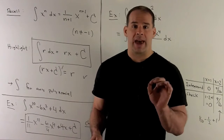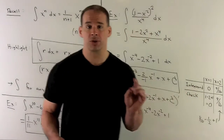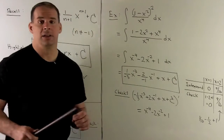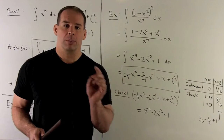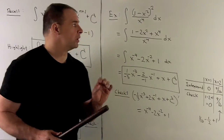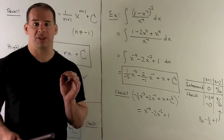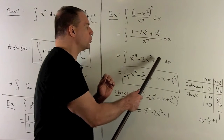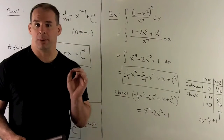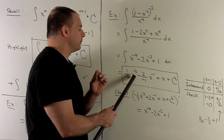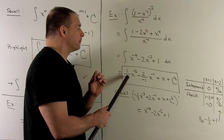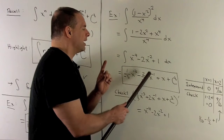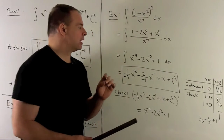We can also handle negative powers of x, as long as the power doesn't equal minus one. For instance, the indefinite integral of (1 minus x squared) squared divided by x to the 4th. That doesn't look like anything we recognize, so we expand and simplify. Expanding the numerator gives 1 minus 2x squared plus x to the 4th. Dividing each term by x to the 4th gives x to the minus 4 minus 2x to the minus 2 plus 1. Applying the add-one, flip-over rule: x to the minus 3 over minus 3, then minus 2 over minus 1 times x to the minus 1, then x. Add the constant of integration.